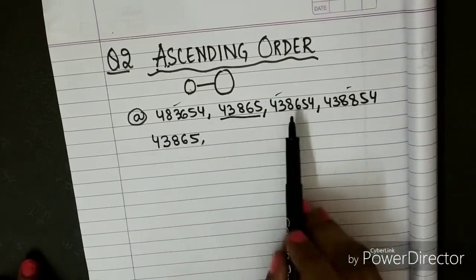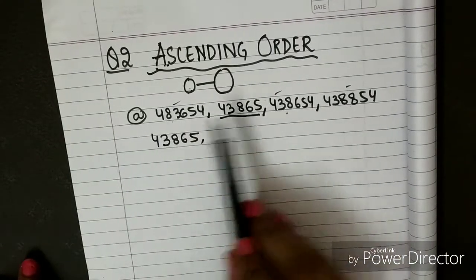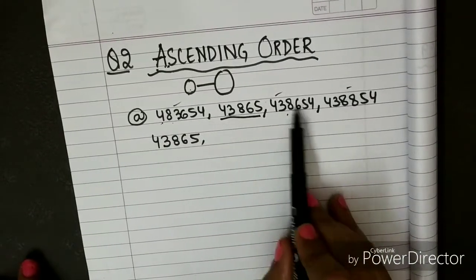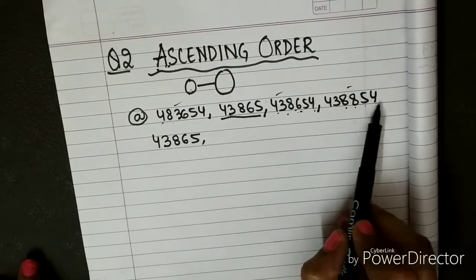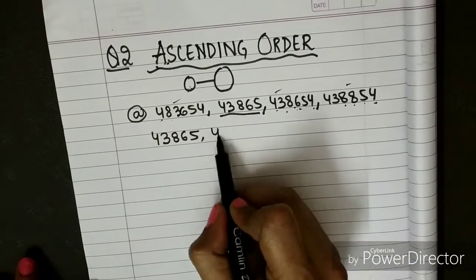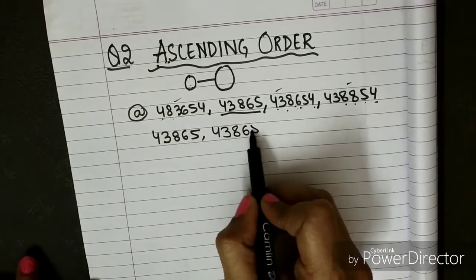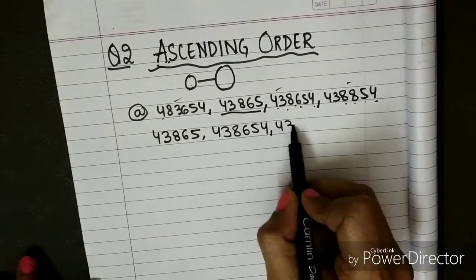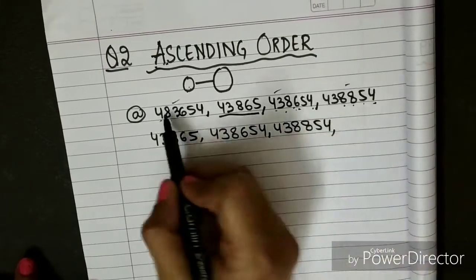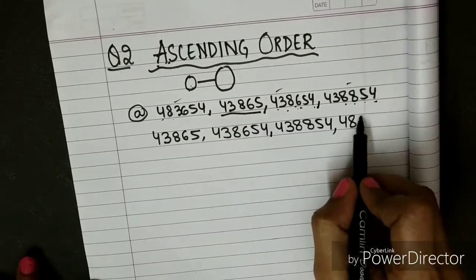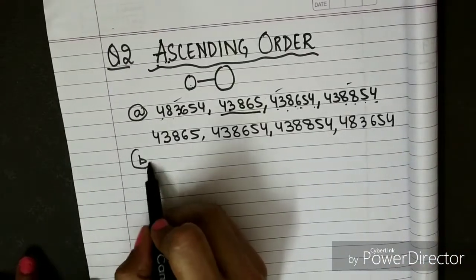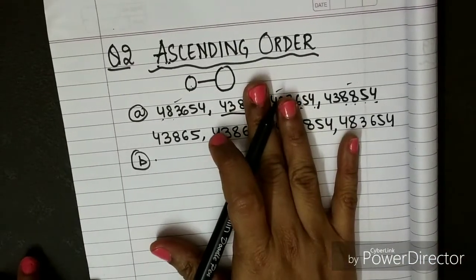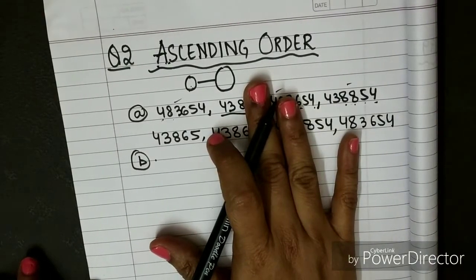So after comparing all the numbers, we write them in ascending order from smallest to biggest. Now part B is for you to try yourself. You will try to do it yourself, and if you have any confusion you can ask your parents for help.